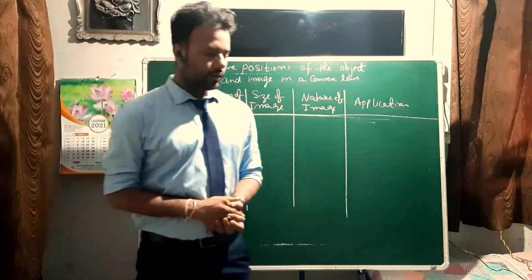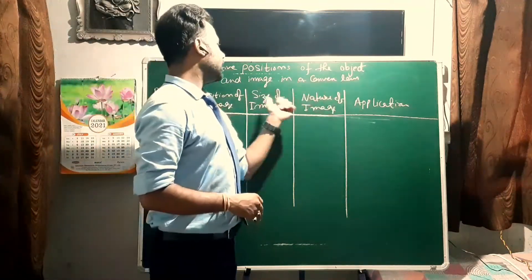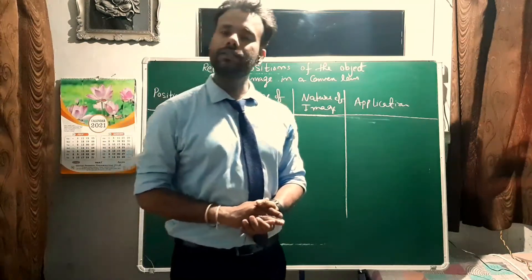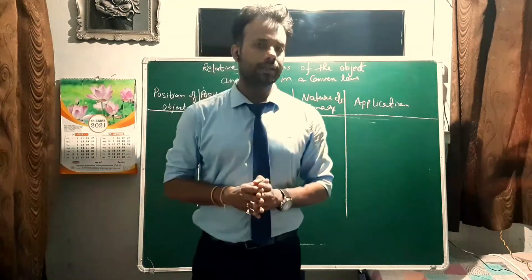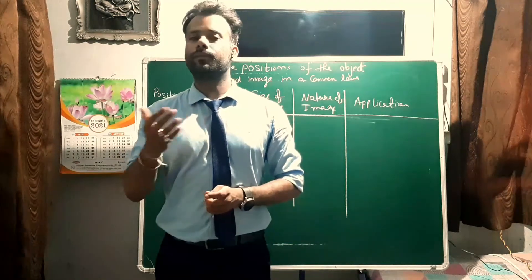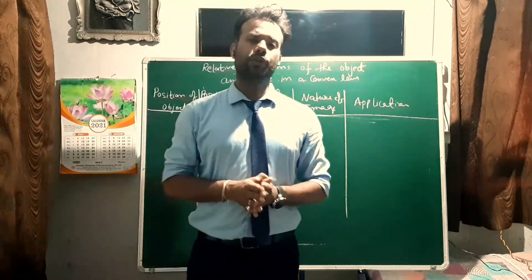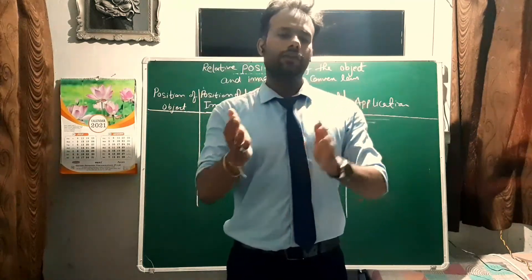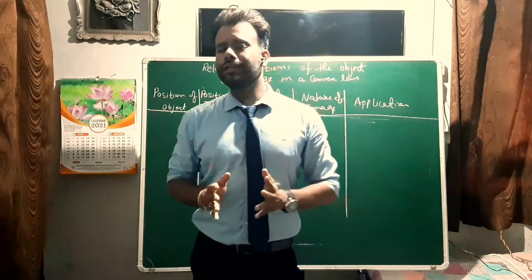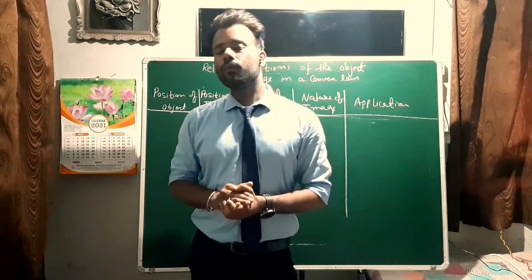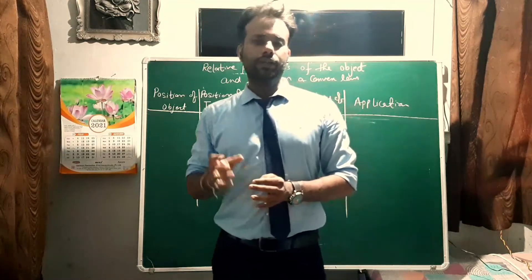Good morning class. As you can see on the board, I have made a table of the relative position of the object and image in a convex lens. We have done this topic yesterday and seen how images are formed with a convex lens when the object is placed at different points. This table will help you memorize the position of the object and images, the nature of the image, and where we use these arrangements as an application of the convex lens.